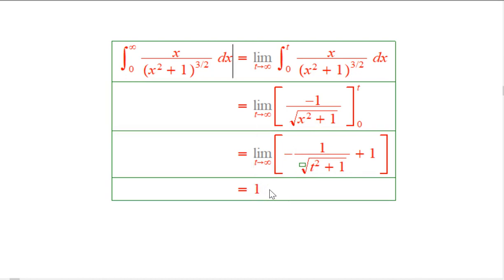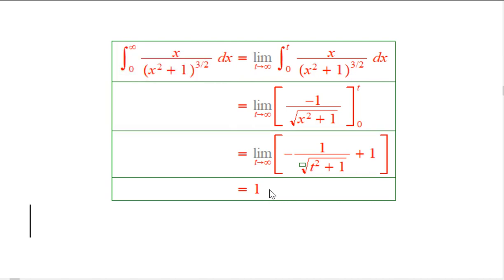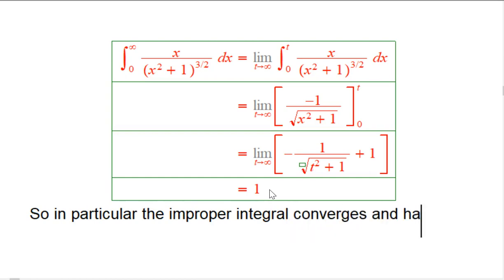So the formal mathematical statement is this improper integral converges. This is called an improper integral. And we're saying it converges and has value one. There's going to be plenty of examples where the answer is simply, this doesn't converge. It does not define a number. It's just like lots of limits we've always seen.